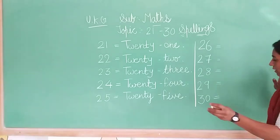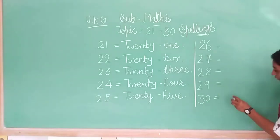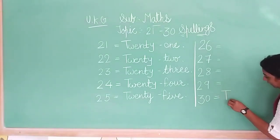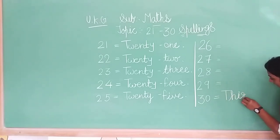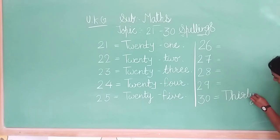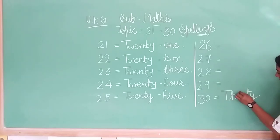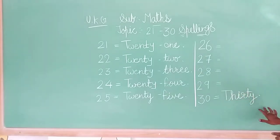I love 30. Thirty: T, H, I, R, T, Y. This is the spelling of 30.